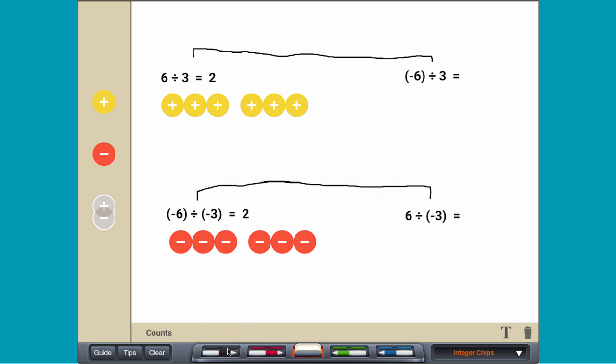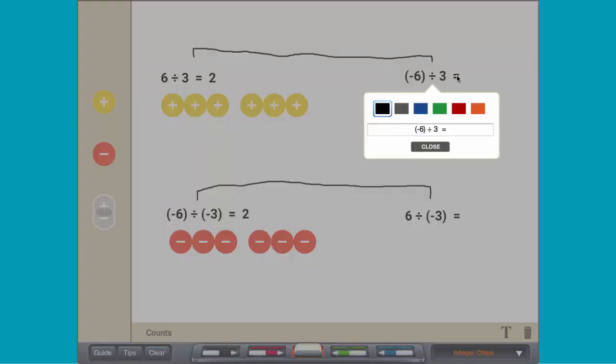Since positive 6 and negative 6 are opposites, the number of groups of positive 3 that can be made from negative 6 is the opposite of the number of those groups that can be made from positive 6.